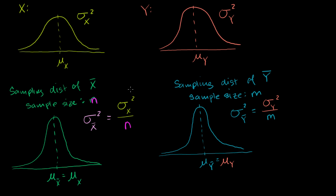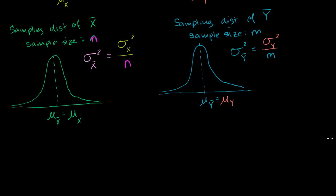Everything so far is review, but I'm doing it with two different random variables for a reason. Now I'm going to define a new random variable z, which is equal to the difference of our sample means: z equals the sample mean of x minus the sample mean of y.